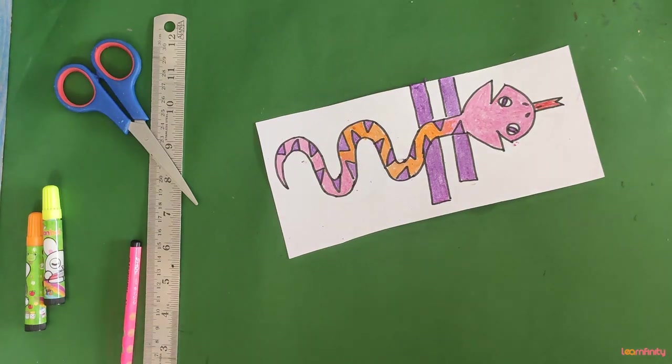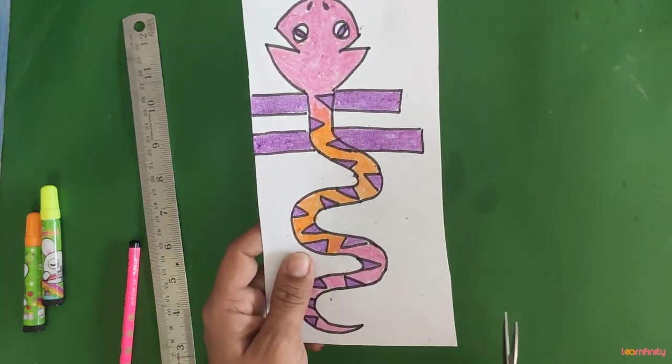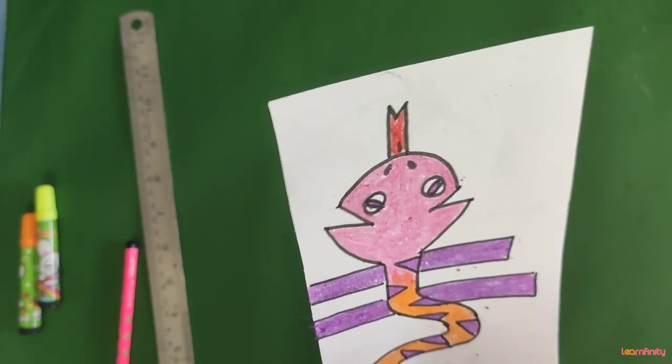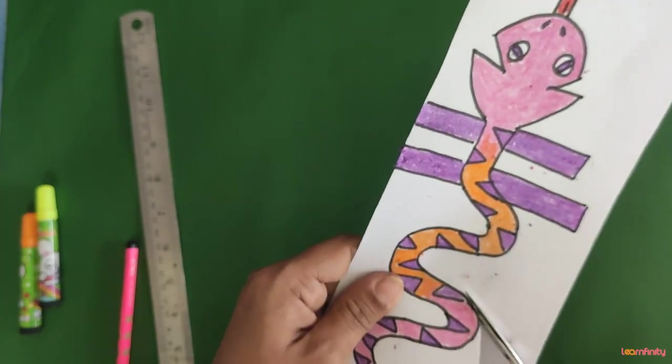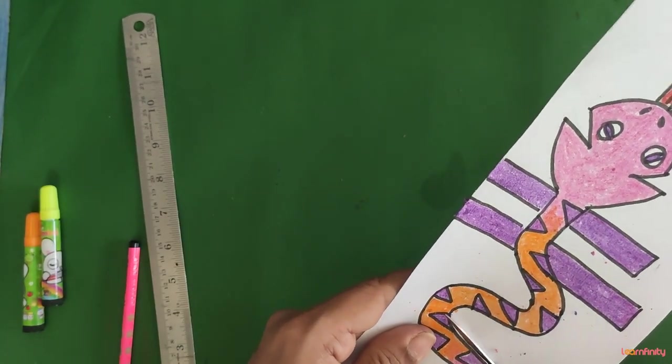Now we will start cutting. This way I have completed the coloring. Now what I am doing, I will start cutting. You have to cut this.